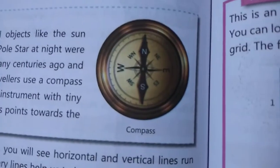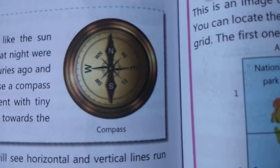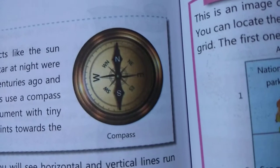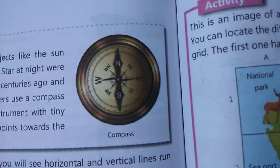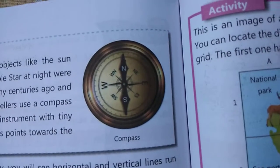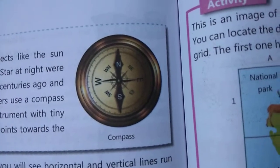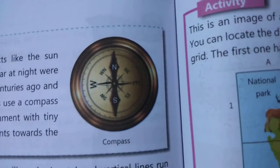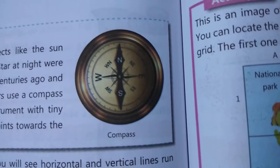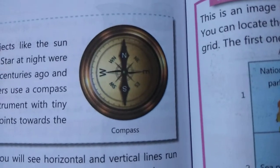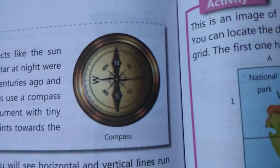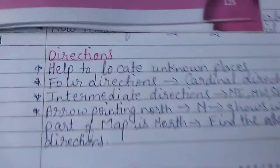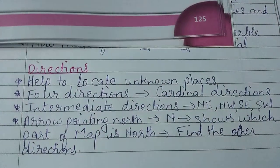This instrument is known as a compass. Earlier, when travelers and sailors were not aware of directions, they used this instrument which has a magnetic needle. The characteristic of this needle is that it always points towards the north. When the needle pointed north, they understood the north direction and then determined the other directions based on that. Hence, all maps have an arrow pointing towards the north to show which part of the map is north.